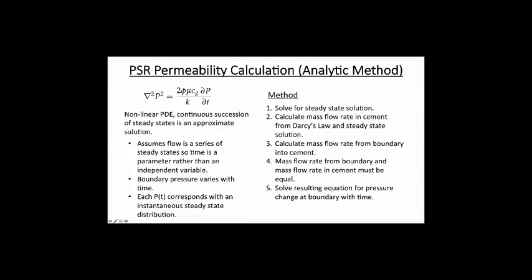With the succession of steady states approximation, flow is assumed to be a series of steady states so that time becomes a parameter rather than an independent variable. The boundary pressure varies with time. At each time step, you assume an instantaneous steady-state pressure distribution in the cement. The steady-state solution is obtained by setting the time derivative equal to zero and applying boundary conditions: P(0) = P1 and P(L) = P2.